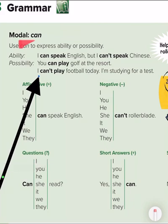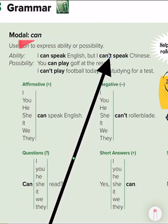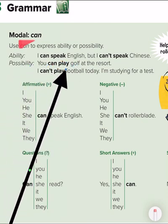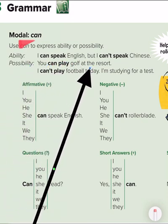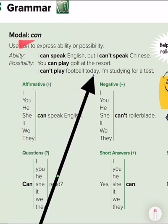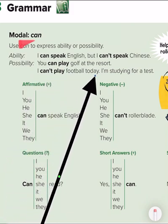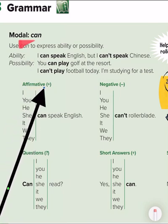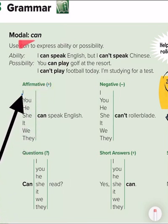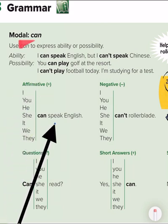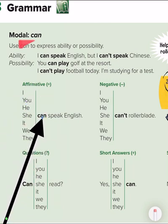Just the past form. I can speak English. I can speak English, but I can't speak Chinese. Possibility: you can play golf at the resort. I can't play football today. I am studying for a test. Look, what do we have here? Affirmative. I, you, he, she, it, we, they. All of that we can say with it can.